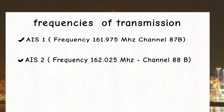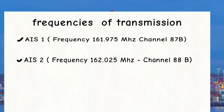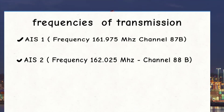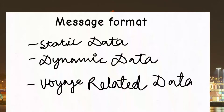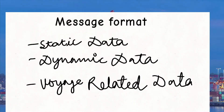What are the frequencies of transmission? Two VHF channels are dedicated by the ITU for their transmission. These frequencies are as follows: AIS 1 frequency 161.975 MHz Channel 87B, and AIS 2 frequency 162.025 MHz Channel 88B.